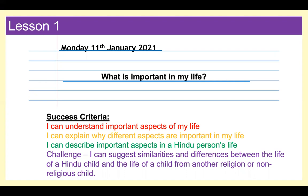Question: what is important in your life? To be successful today, you need to make sure you can show three things: you can understand important aspects of your life, you can explain why different aspects are important in your life, and you can describe important aspects in a Hindu person's life. The challenge for today is to suggest similarities and differences between the life of a Hindu child and the life of a child from another religion or a child who is non-religious.